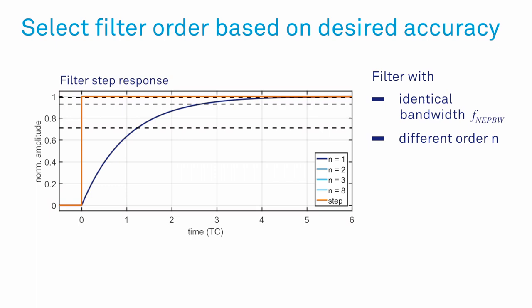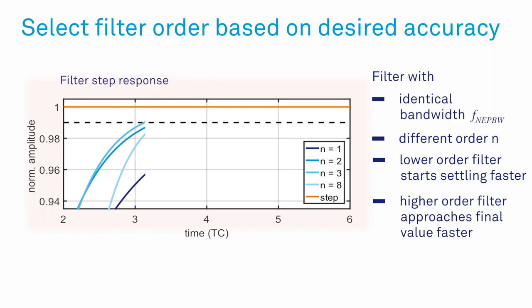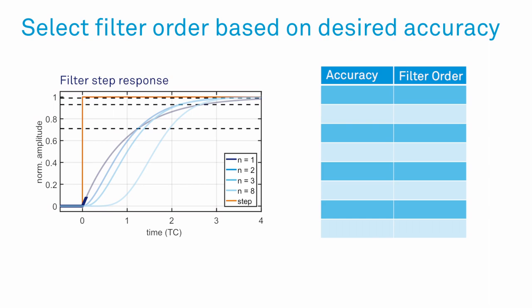The step responses of filters with the same bandwidth but different order illustrate the various settling characteristics. They depict the settling time it takes to reach a fraction of the new value. Lower orders start settling faster but approach the final value slower than higher orders.